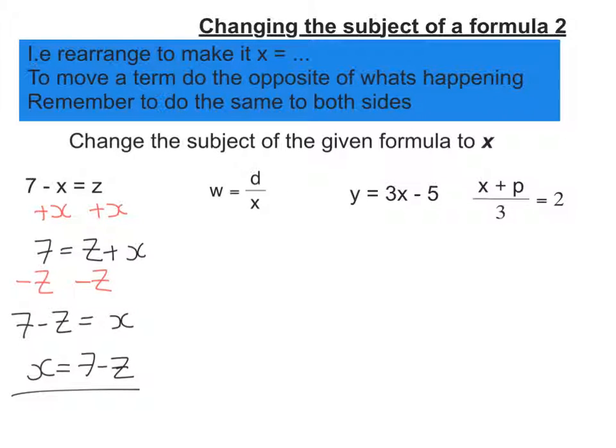So the second question, we've got w equals d over x. So I'm going to use two steps to work out what x equals. So first I'm going to multiply both sides by x to get the x off the bottom here. So the left hand side becomes x times w, so that's xw.